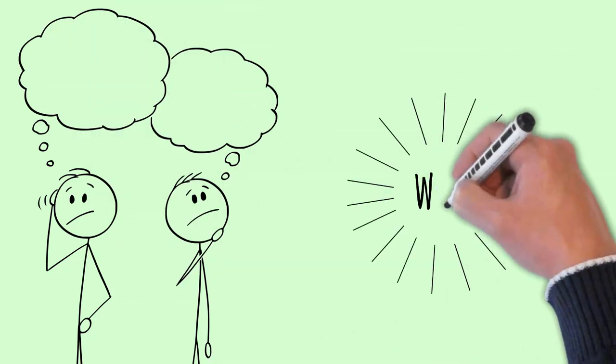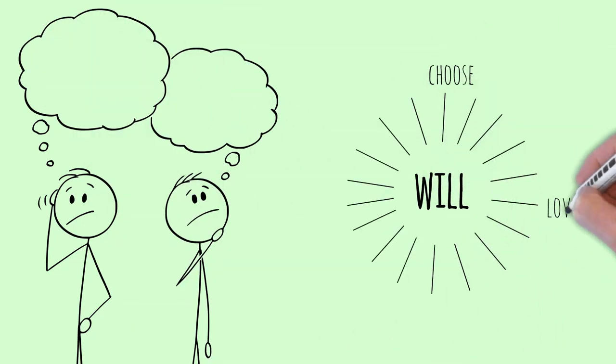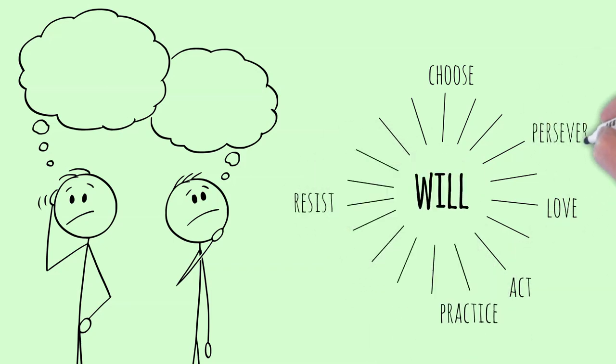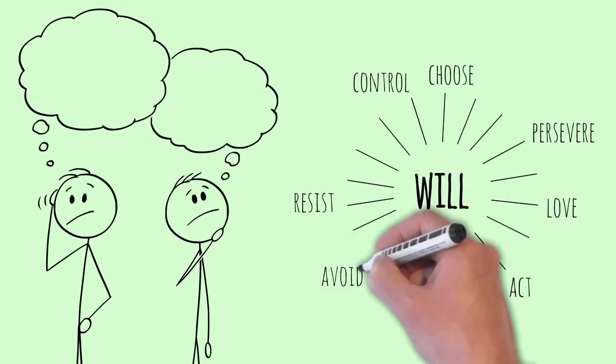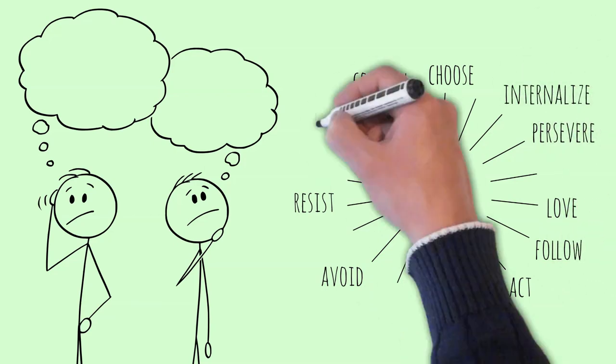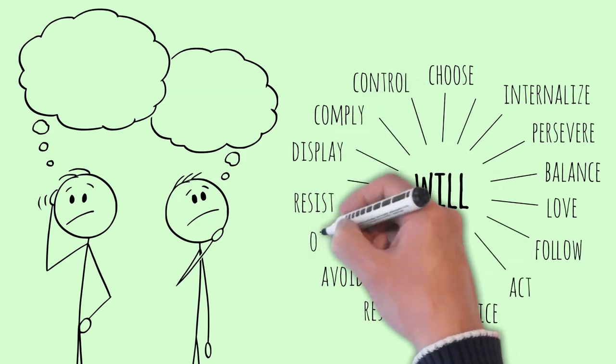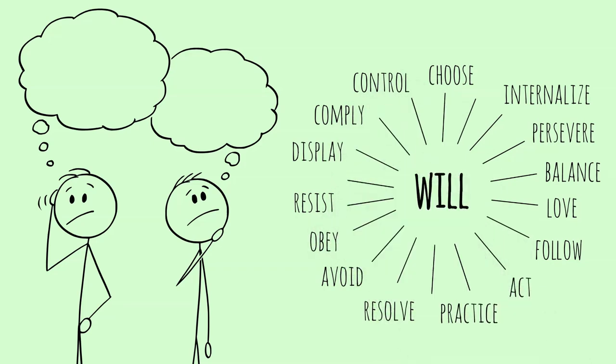The word will or volition can be associated with the following words: choose, love, practice, act, resist, persevere, control, avoid, follow, internalize, comply, resolve, balance, display, obey, and many more.